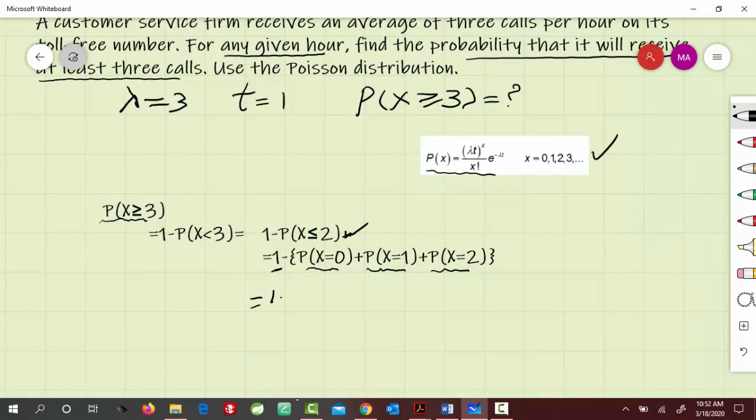This equals 1 minus... When x is 0, I get lambda t (lambda is 3, t is 1), so 3 to the 0, divided by 0 factorial, times e to the minus 3, plus